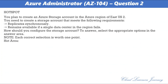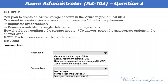Question number 2. You plan to create an Azure storage account in the Azure region of East US 2. You need to create a storage account that meets the following requirements: replicates synchronously, and remains available if a single data center in the region fails. How should you configure the storage account? The options are: geo-redundant storage (GRS), locally redundant storage (LRS), read-access geo-redundant storage (RA-GRS), or zone-redundant storage (ZRS).